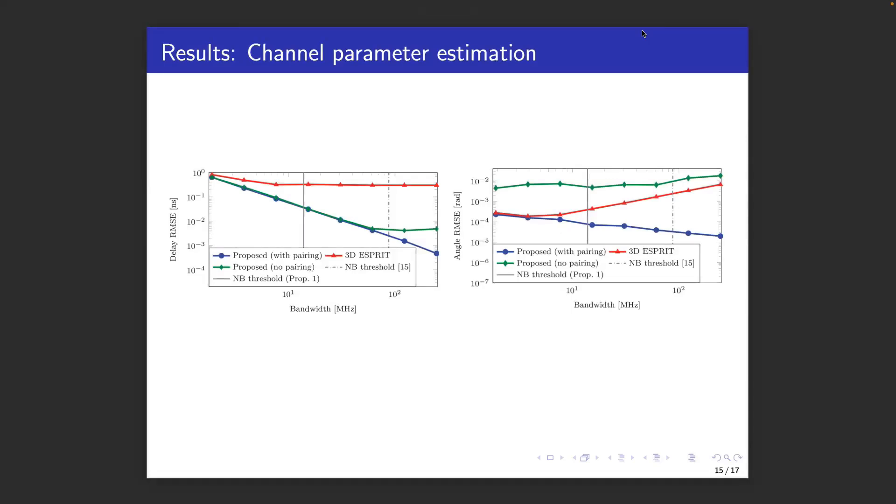The figure on the left shows the delay RMSE as a function of the bandwidth. The figure on the right shows the angle RMSE as a function of the bandwidth. In each of the figures, we have several curves. The red line is 3D Esprit, which only works for small bandwidths. The green line is the proposed method without k-mean pairing, which involves a different delay estimation routine detailed in the paper. And finally, the blue line is the proposed method with k-means pairing. In terms of delay estimation on the left, we see that the proposed method can significantly outperform the standard 3D Esprit, especially for large bandwidths where the wideband effect is more pronounced. The standard 3D Esprit has a constant performance since delay estimation is not affected by the wideband effect.